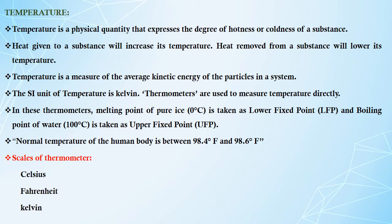In these thermometers, melting point of pure ice is taken as the lower fixed point and boiling point of water is taken as the upper fixed point. Normal temperature of a human body is between 98.4 degrees Fahrenheit and 98.6 degrees Fahrenheit. Scales of thermometers: Celsius, Fahrenheit, and Kelvin are different scales of thermometers.